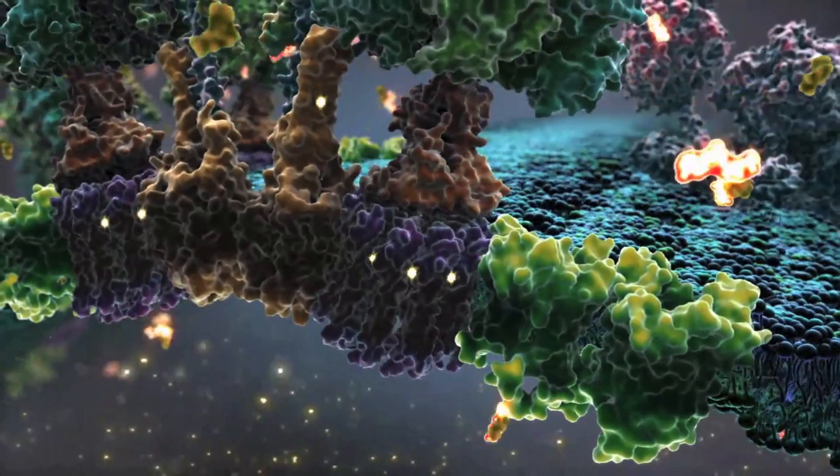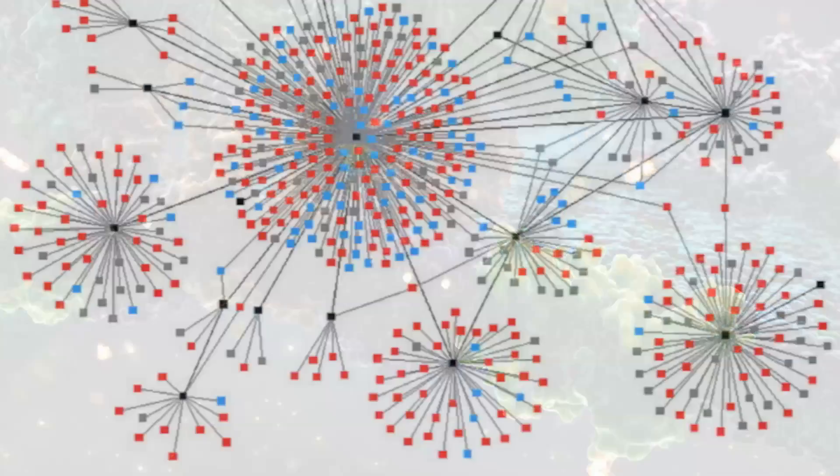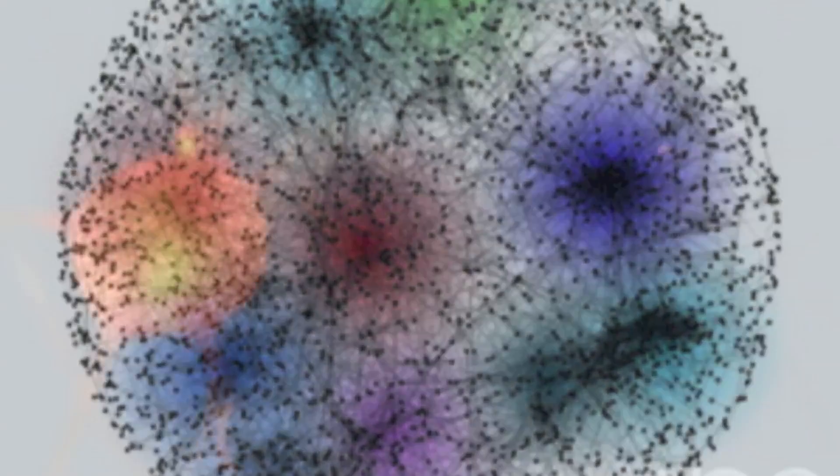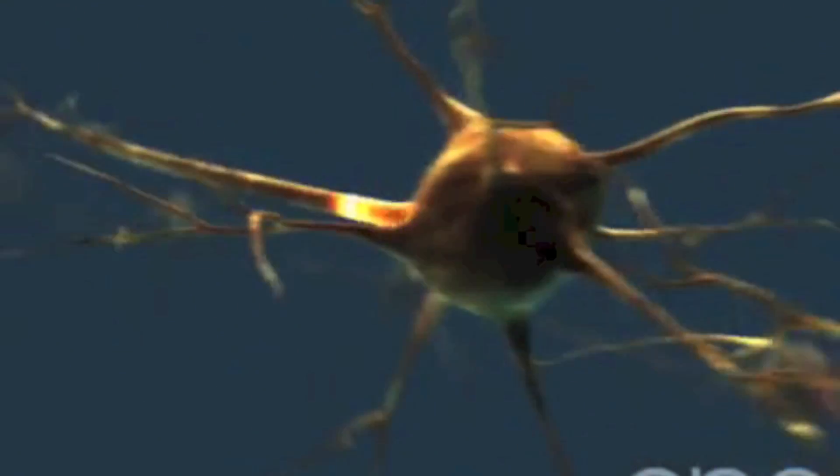But how does modularity evolve in the first place? We investigated why modularity evolves in networks, such as genetic regulatory networks and the neural networks that make up your brain.